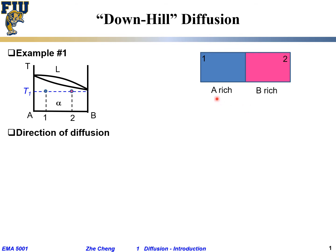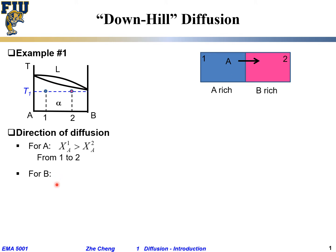The direction of diffusion, by observation and common sense: piece one is richer in A, so naturally element A goes from the piece that is richer in A toward the piece that is leaner or more deficient in A. That is, x_A1 — the atom fraction of A in piece one — is greater than in piece two. So for downhill diffusion, element A flows from piece one to piece two. This is what we call downhill diffusion.